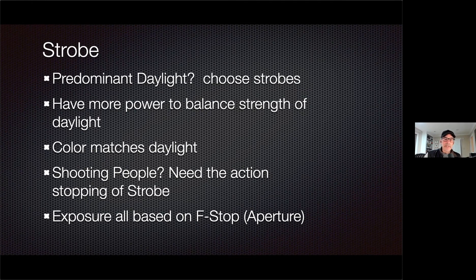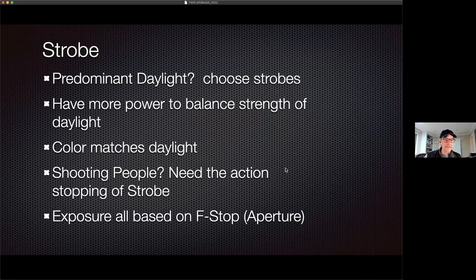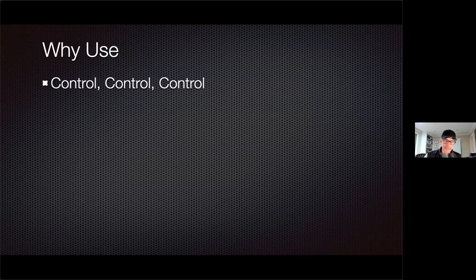Strobes are much broader than hot lights. With hot lights you end up needing many more fixtures — one light might only light the back of one chair and maybe there are 10 chairs. Use strobe when it's predominantly daylit, because strobes compete much better with bright windows and match the color of daylight better. If you're trying to shoot people and keep them still, strobe helps; if you want them blurry, strobe does not help. With strobe, exposure is based on aperture rather than shutter speed, which gives creative control.